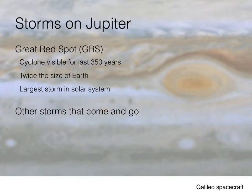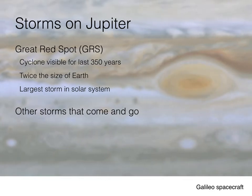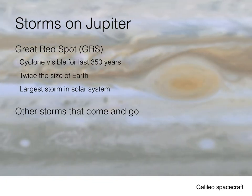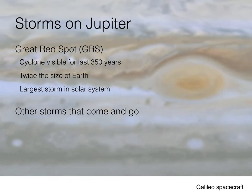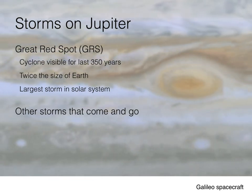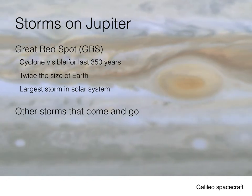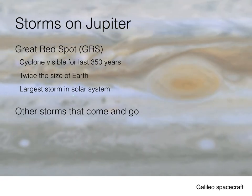We also see storms in the atmosphere as well. The most famous of which is the Great Red Spot — I never said that astronomers were good at naming things; it's just what it's called. And it's been visible for quite some time. As I mentioned in an earlier lecture, it wasn't long after Galileo's initial observations that astronomers began noticing that Jupiter had a spot in addition to these bands. And that spot turned out to be the largest storm in the solar system.